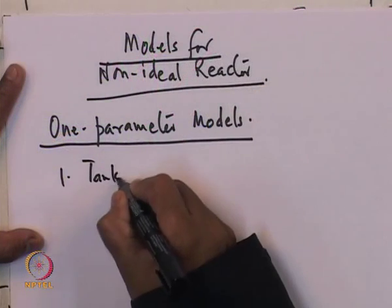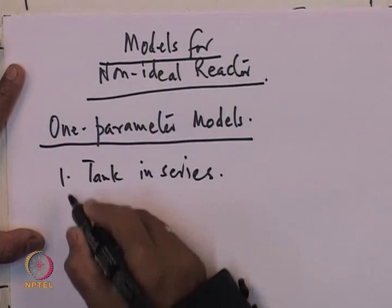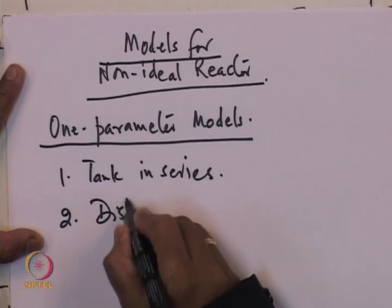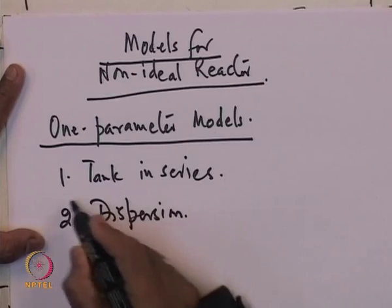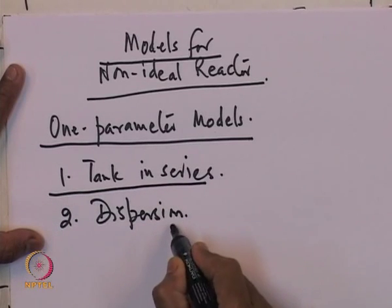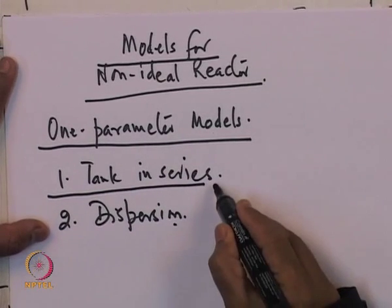You can have a model with many parameters, but right now we are just looking at a one-parameter model. The two types of models that we have looked at: the first is tanks-in-series and the second one is dispersion. We have just looked at the tanks-in-series model in detail, and today we are going to talk about the dispersion model, but first let us quickly revise what the tanks-in-series model is.